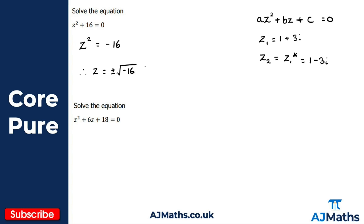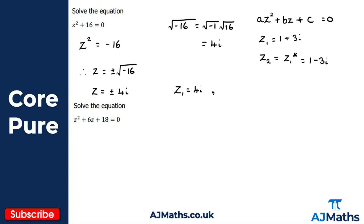The square root of −16 we can split up as the square root of −1 times the square root of 16. The square root of −1 is i, and the square root of 16 is 4, so we get 4i. My solution for z is therefore z = ±4i. Notice this occurs in a conjugate pair: z₁ = 4i and z₂ = −4i.